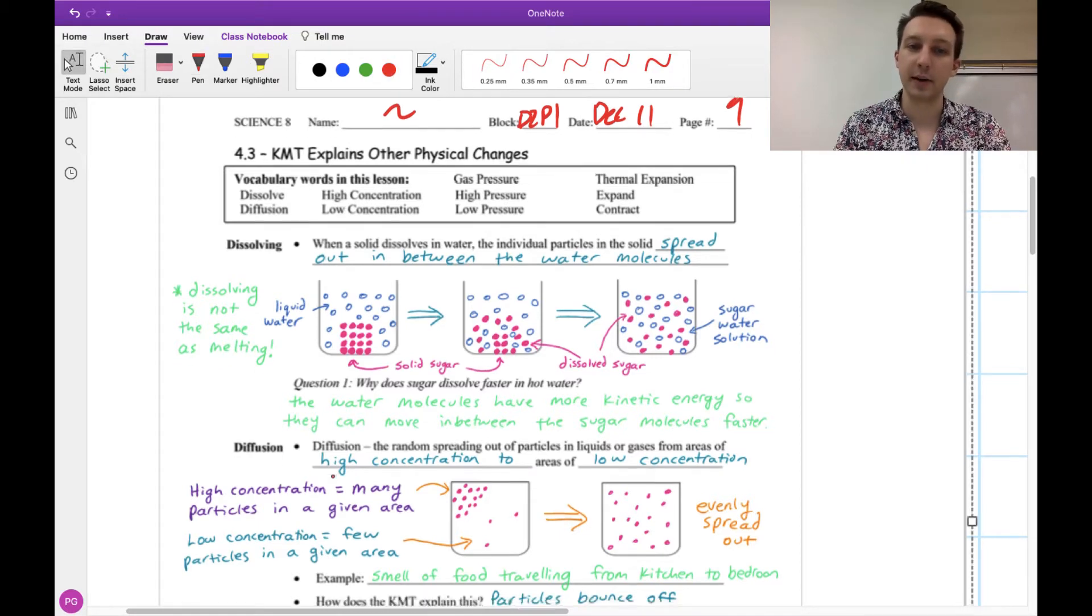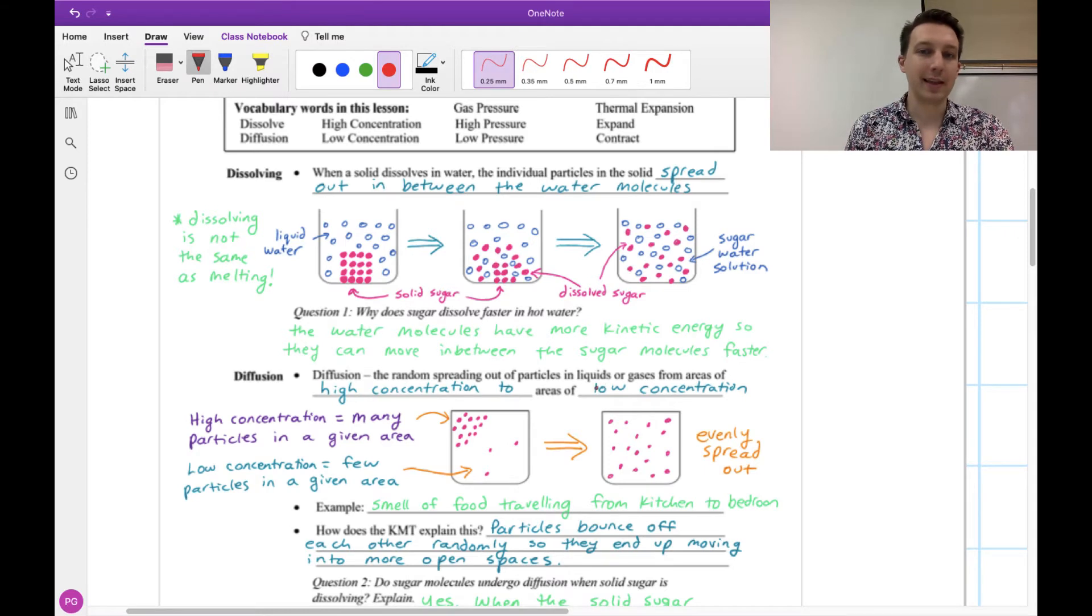As it turns out, sugar dissolves faster in hotter water. That's because the water molecules have more kinetic energy, so they can get in between the sugar molecules faster and run into the sugar molecules with more force. Now diffusion is something that's very similar, but this is what happens usually in liquids or gases, where we have a high concentration to low concentration. For example, you can have a high concentration of particles in one specific spot, but over time they're going to evenly spread out.